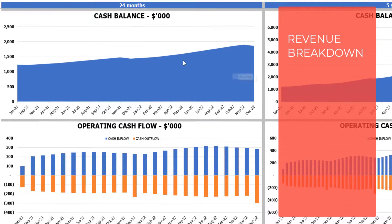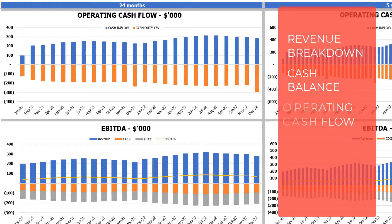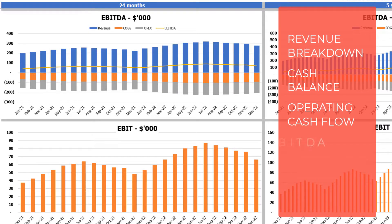The next pair of charts shows the cash balance for two years and five years. After that, the operating cash flow broken down by cash inflow and outflow. Then the EBITDA breakdown — showing revenue, COGS, and OpEx — with the resulting EBITDA value shown as a yellow line by months.